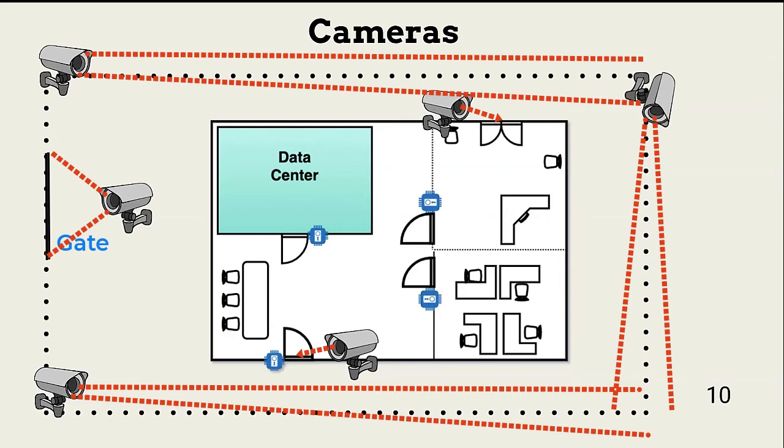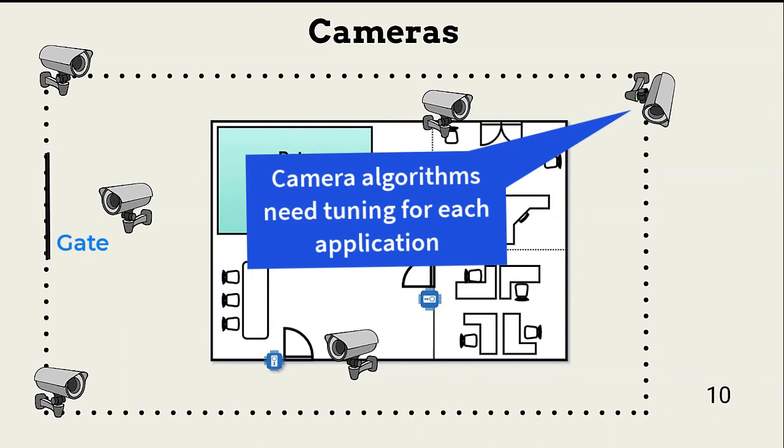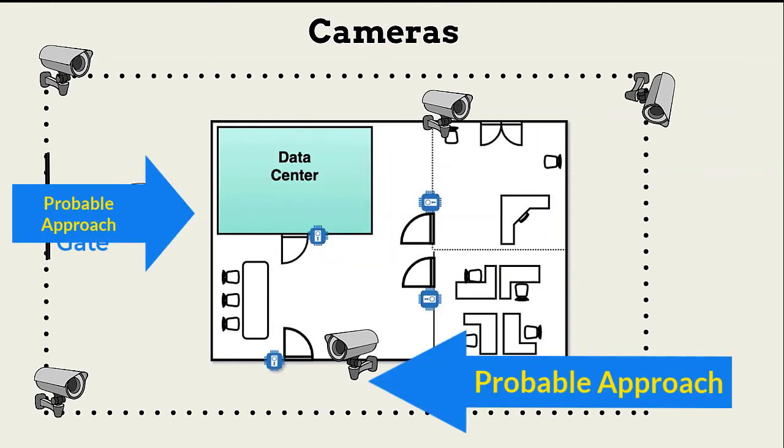Security cameras today can also trigger an alarm if motion is detected, bringing human attention to possible intrusions. This requires tuning cameras to eliminate as much noise as possible, such as animals. Cameras don't have to be placed everywhere. If budget is a concern, consider identifying probable avenues of approach to the perimeter and structures, and monitor them with cameras.